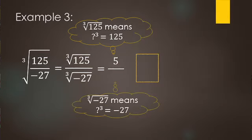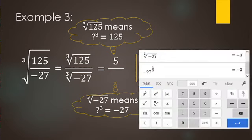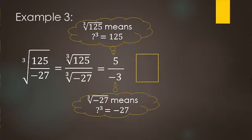Now we do the cube root of negative 27. With square roots we can't take the root of a negative, and the same applies to fourth roots or any even root of a negative. But you can do a cube root, fifth root, or any odd root of a negative number. So the cube root of negative 27 equals negative three, because negative times negative times negative — three negatives multiplied — gives a negative. Our final answer is negative five thirds, since we normally don't leave negatives in the denominator.